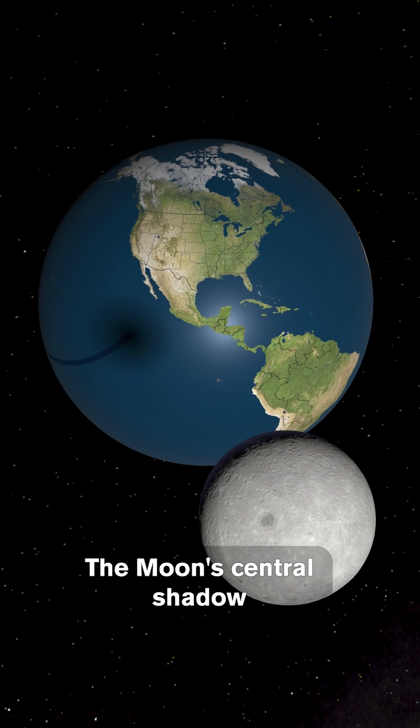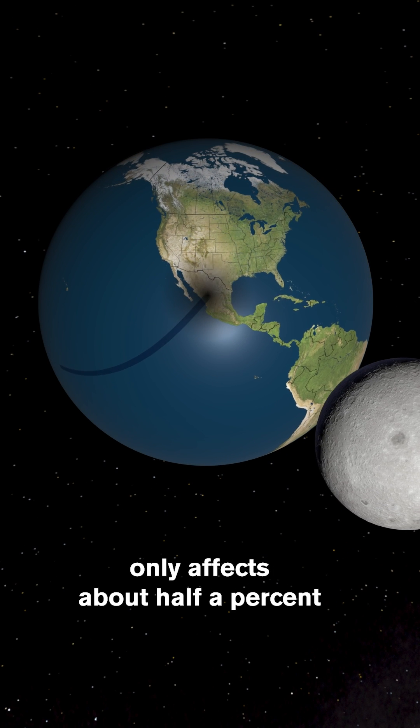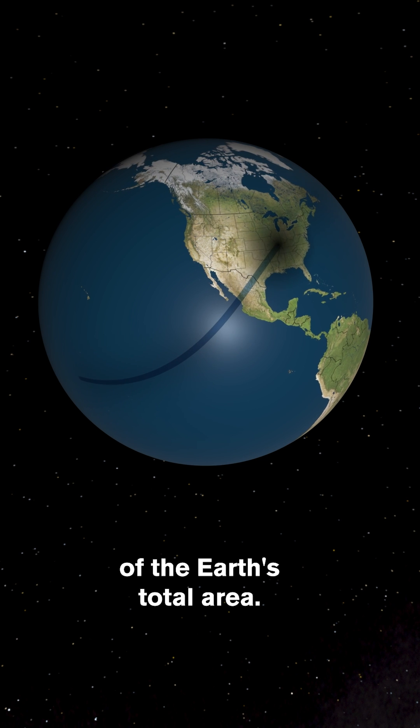As it crosses the Earth, the Moon's central shadow only affects about half a percent of the Earth's total area.